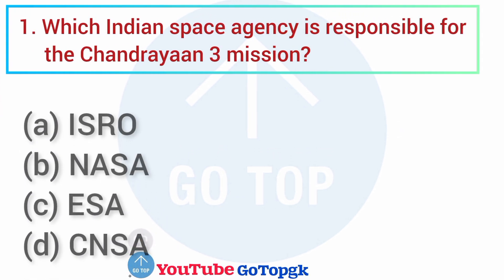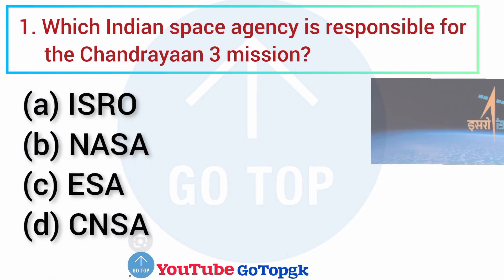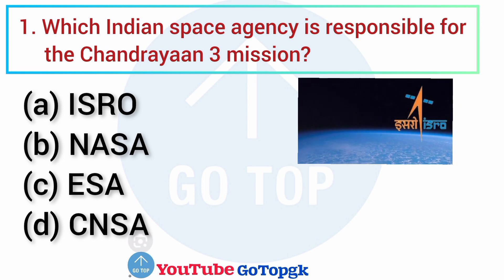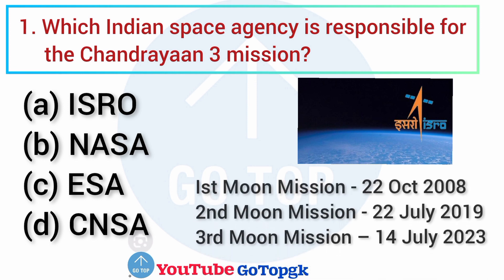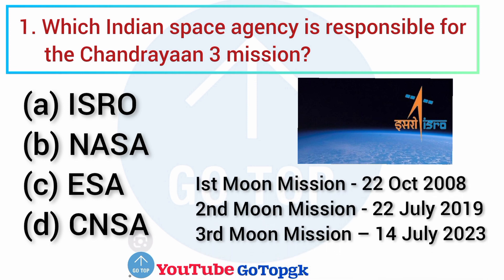Which Indian Space Agency is responsible for the Chandrayaan-3 mission? Options: A. ISRO, B. NASA, C. ESA, D. CNSC. Your correct answer is option A: ISRO. First Moon Mission: 22 October 2008. Second Moon Mission: 22 July 2009. Third Moon Mission: 14 July 2023.